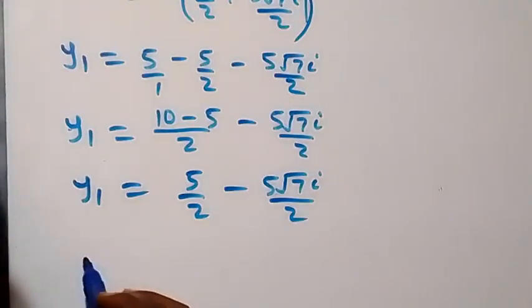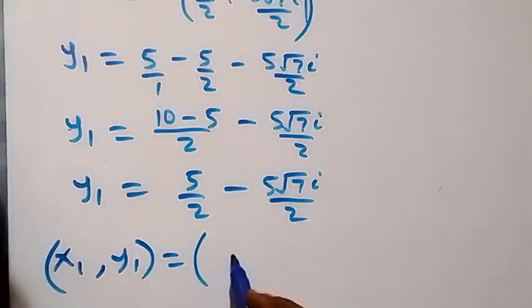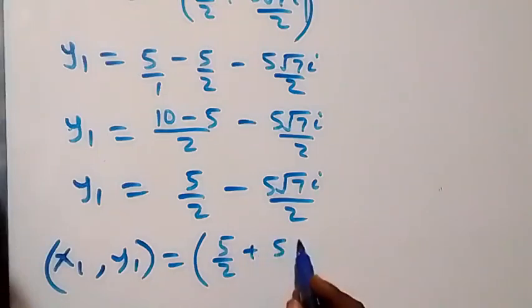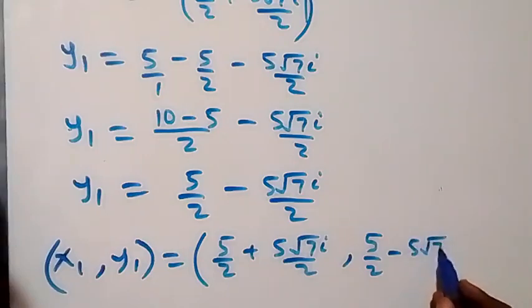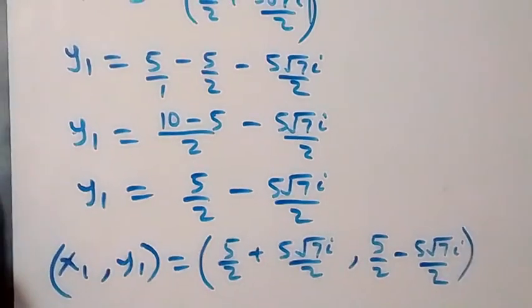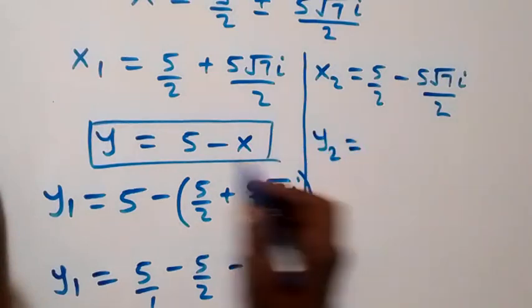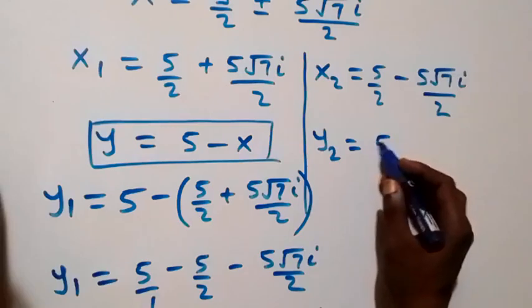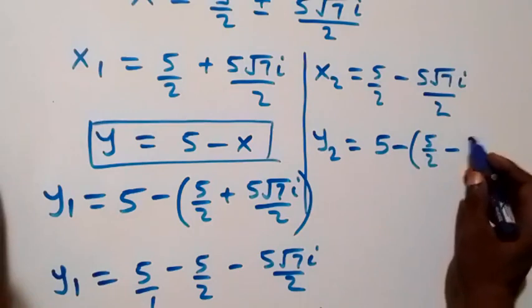The first set of solutions is: x₁ equals five over two plus five root seven i over two, and y₁ equals five over two minus five root seven i over two. Now solving for y₂ using the same approach: y₂ equals five minus x₂, where x₂ is five over two minus five root seven i over two.